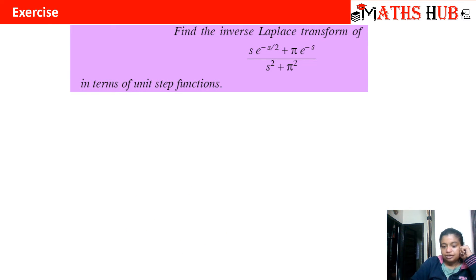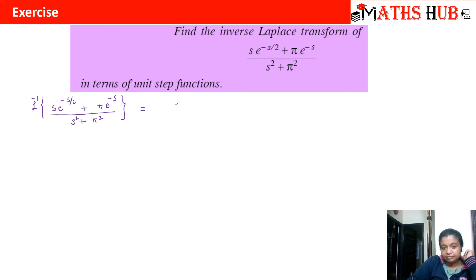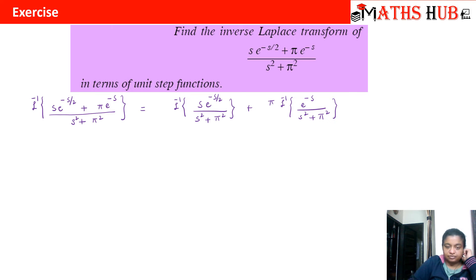Now let us calculate the inverse Laplace transform of the expression: s e raised to power minus s by 2 plus pi e raised to power minus s, all divided by s squared plus pi squared. I can split this into the inverse Laplace of s e raised to power minus s by 2 divided by s squared plus pi squared, plus pi times the inverse Laplace of e raised to power minus s upon s squared plus pi squared.